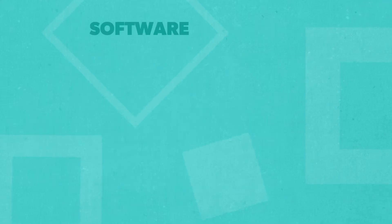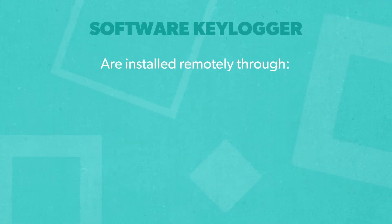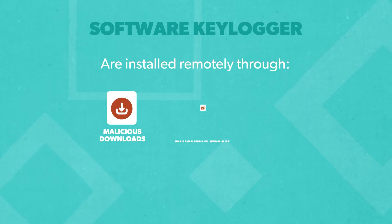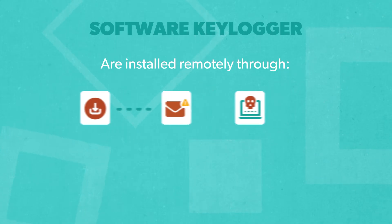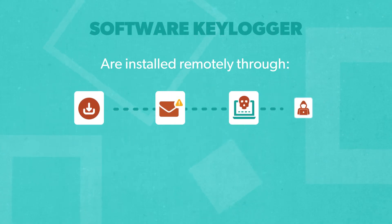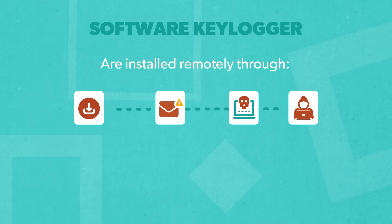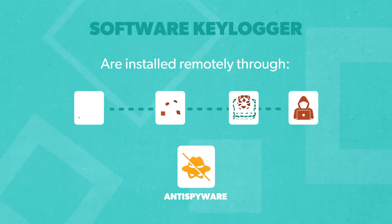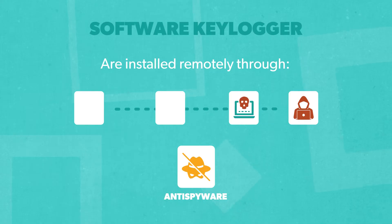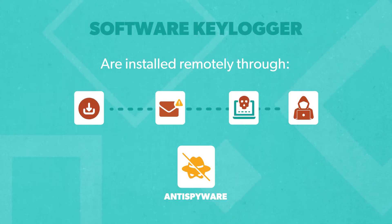Software keyloggers are installed remotely through malicious downloads, phishing email attachments, or system hacks. They send data back to the hacker over the internet. Good anti-spyware programs can spot and eliminate them, but attackers are always inventing new ways to evade security.